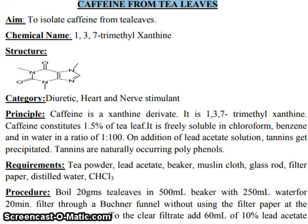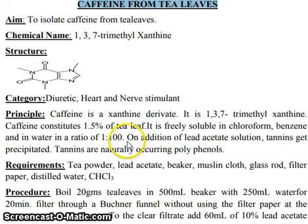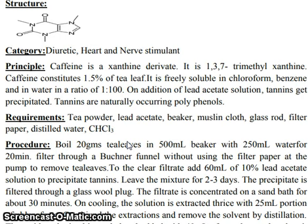The chemical name of caffeine is 1,3,7-trimethylxanthine. Look at the structure of caffeine. The category is diuretic, heart and nerve stimulants. Regarding the principle, caffeine is a xanthine derivative — it is 1,3,7-trimethylxanthine.